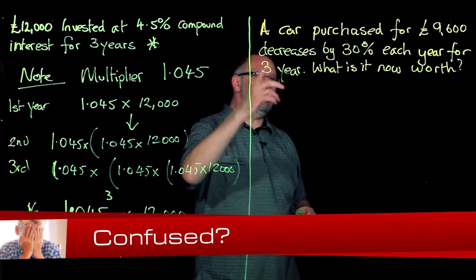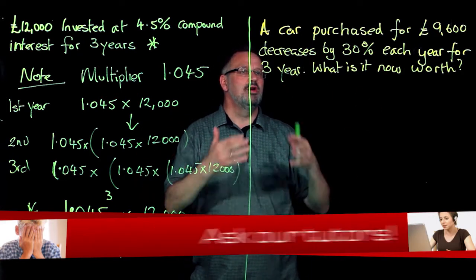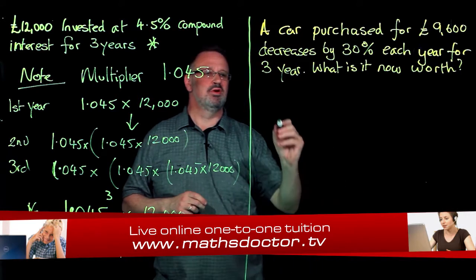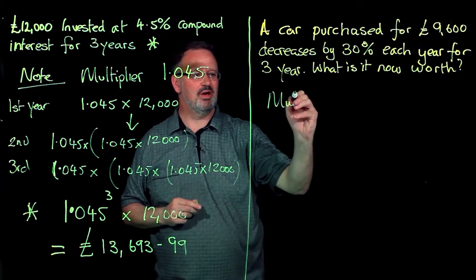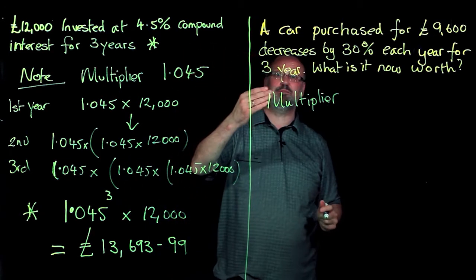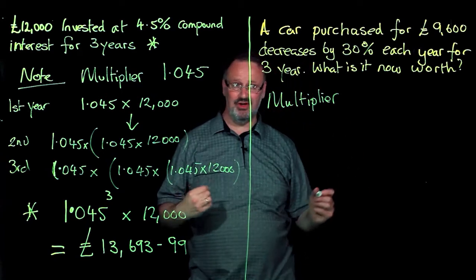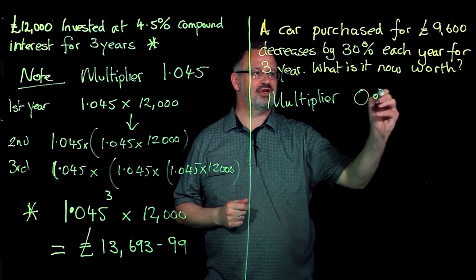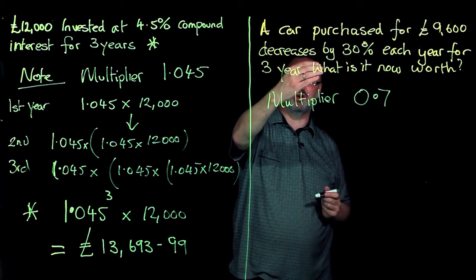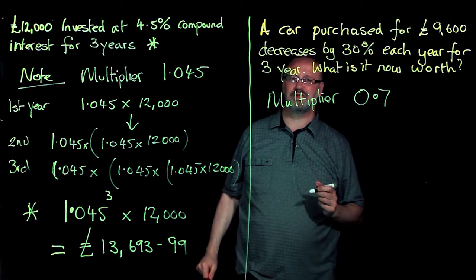For this one here, back of my mind, immediately the car's going down by value. So I know my answer is going to be less than 9,600. So the multiplier, in this case, is going to be, well, if it's going down by 30%, I am left with 70%. 70% is 0.7. I found that by saying, decreasing by 30%, 30 away from 100, gives me my multiplier of 0.7.